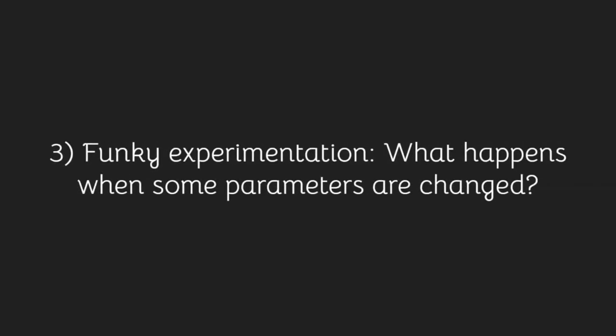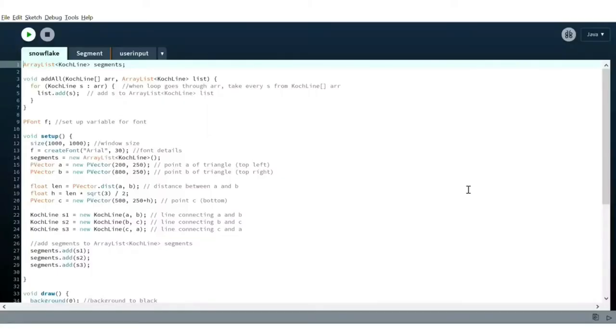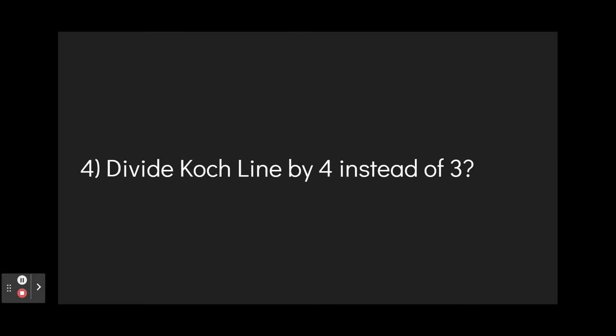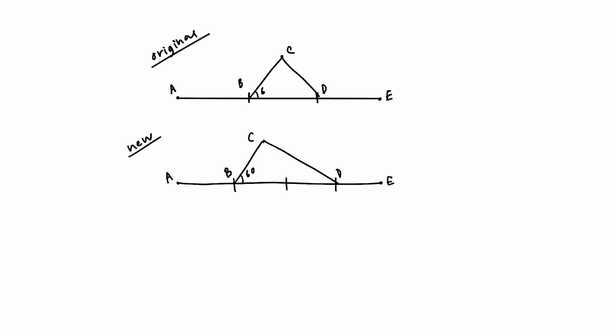What happens if some of the parameters are changed? This can be modeled with our program. What if we divide the Koch line by 4 instead of 3? Originally, we divide the line segment by 3 and create an equilateral triangle with that length, but what if instead of dividing our line segment by 3, we divided it by 4?